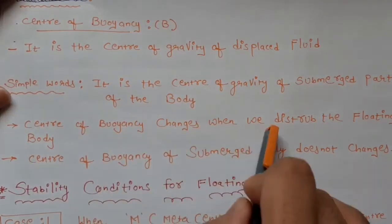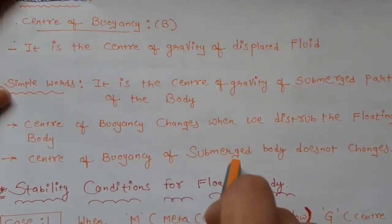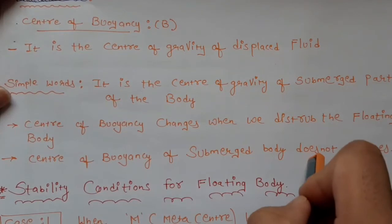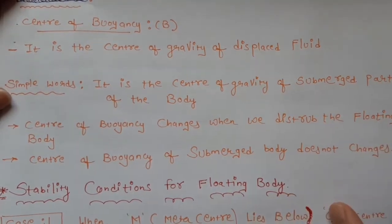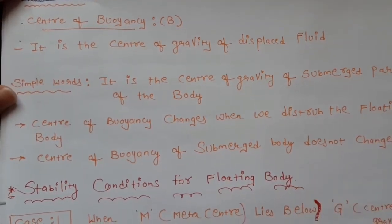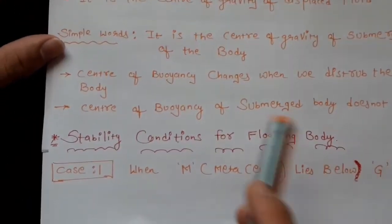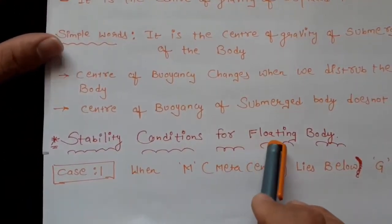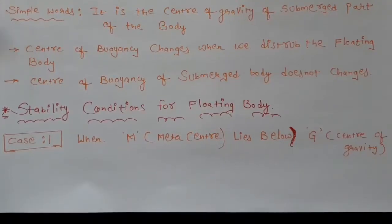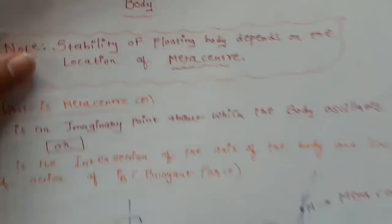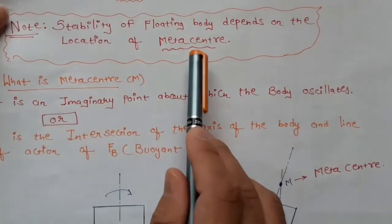Center of buoyancy changes when we disturb the floating body, and center of buoyancy of the submerged body does not change when we disturb it. Now we will move to the stability conditions of the floating body, which depend on the location of the metacenter.